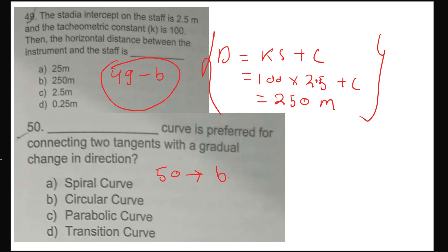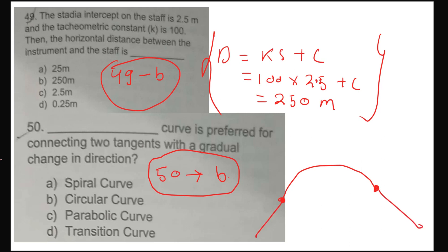Question 50 may seem confusing but the answer is option B. The main objective is direction change, and the main element is a circular curve. It is connected to two tangent points, from where transition curves go on either side — transition curve, circular curve, transition curve. So for question 50, direction change is the main objective of the circular curve, and option B is correct. Check option B for question 50.